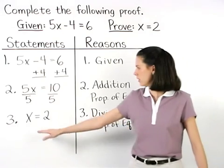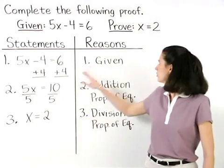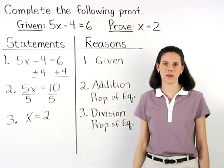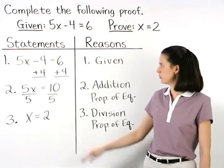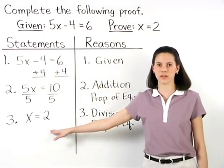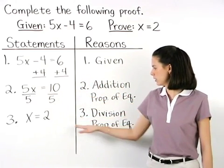Notice that in our statements column, we now have x equals 2, which is what we set out to prove. So we have completed our proof. Think of this proof as just a fancy way of solving an equation, where we have to give a reason for each step along the way.